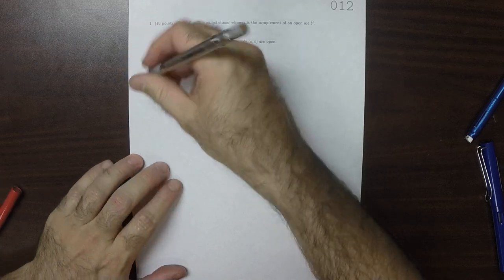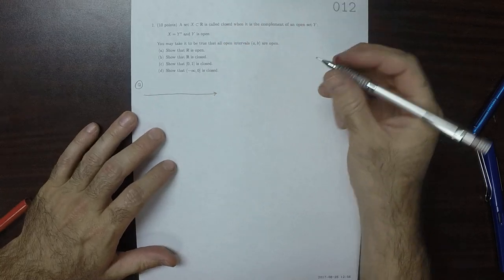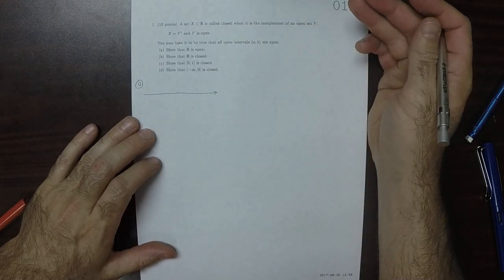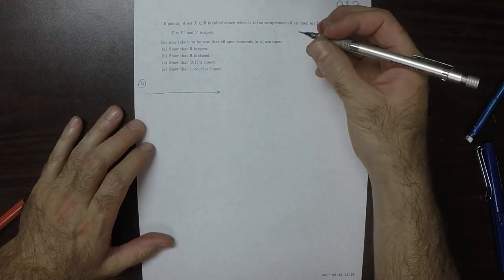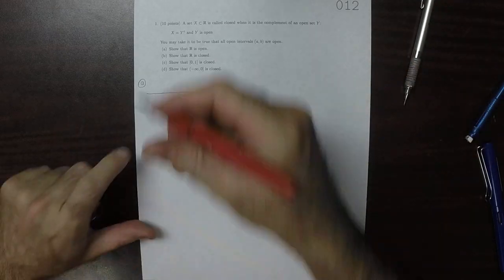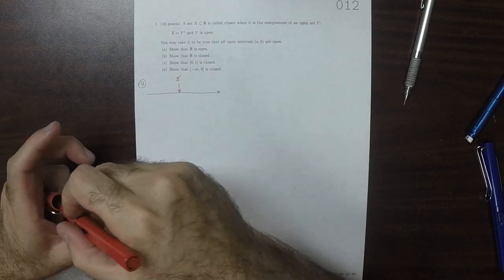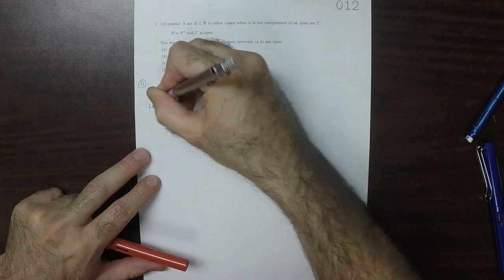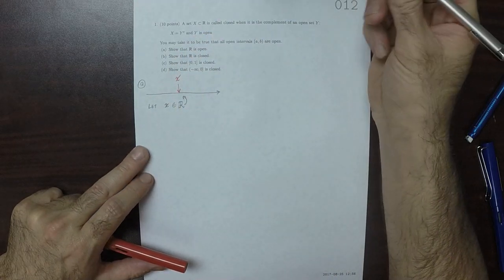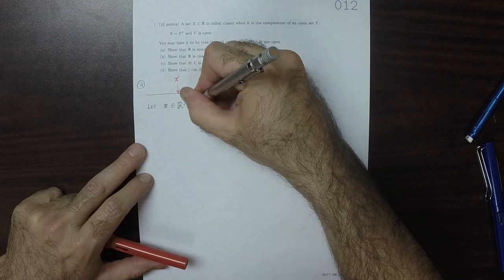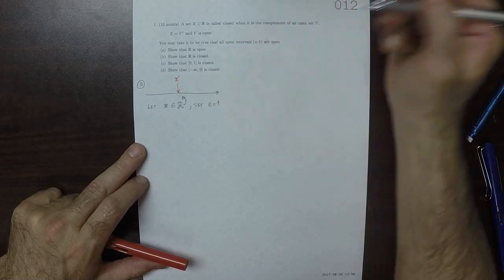So for part A, we've got the whole real line. According to the definition of open from the previous exercise, we can just select any x. So let x be in the reals in no particular spot. Set epsilon is 1, or any positive number that you like.